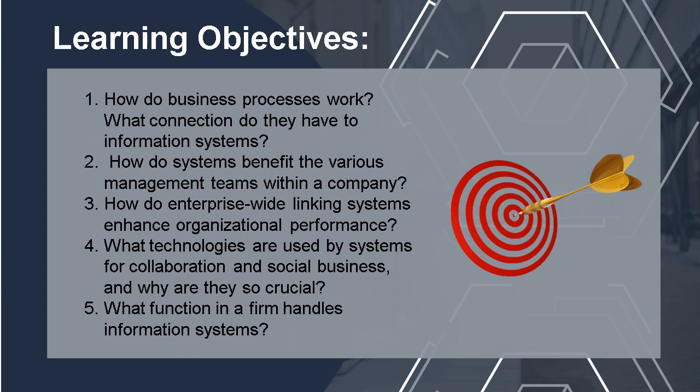The learning objectives for this topic are: first, how do business processes work and what connection do they have to information systems; how do systems benefit the various management teams within the company; how do enterprise-wide linking systems enhance organizational performance; what technologies are used by systems for collaboration and social business and why are they so crucial; and lastly, what function in a firm handles information systems.